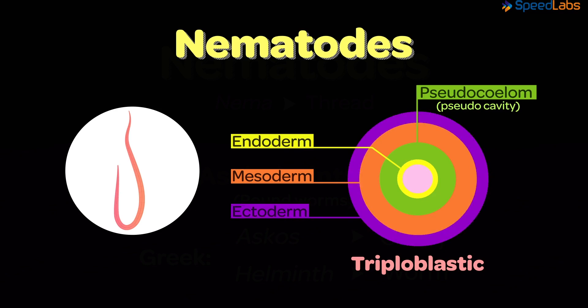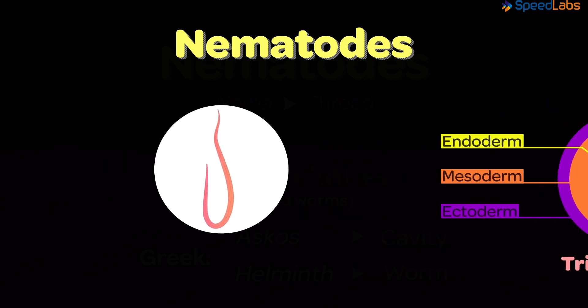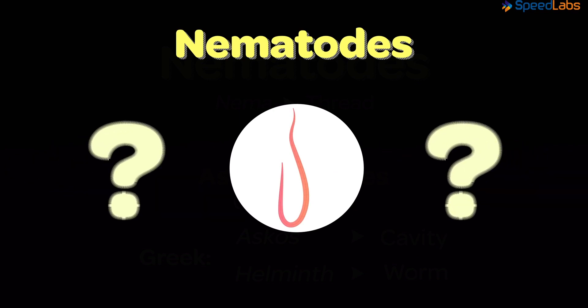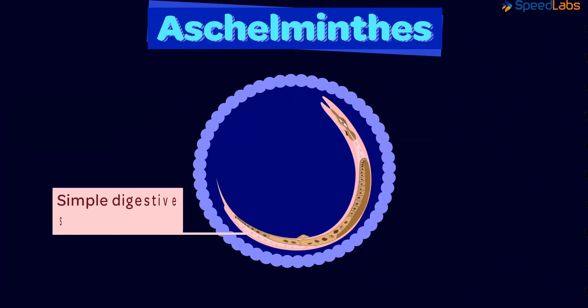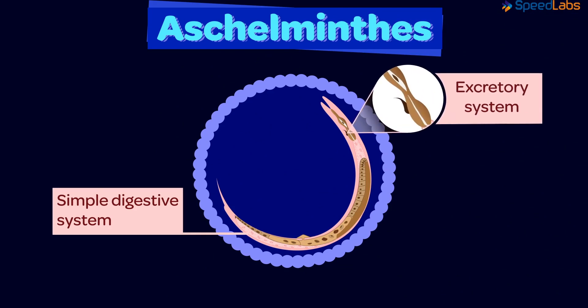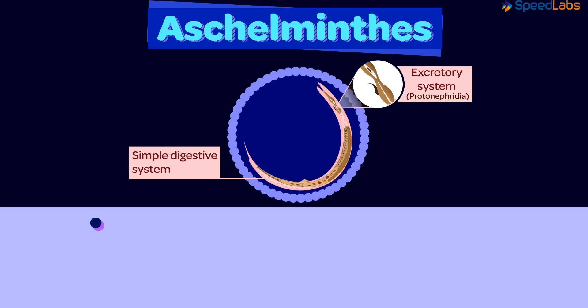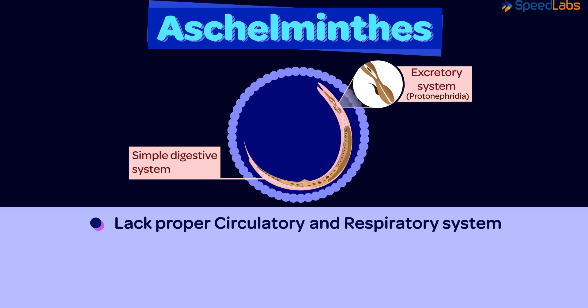Now, we said there are organs which make up the systems. To begin with, we have a simple digestive system, which helps in the breakdown of simple food molecules. The excretory system is also quite simple and consists of canals and cells called the protonephridia. These organisms however lack a proper circulatory and respiratory system – these processes occur via simple diffusion.